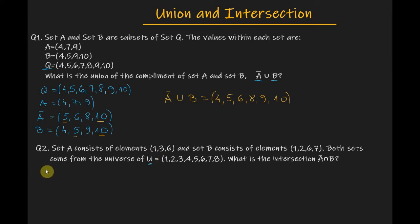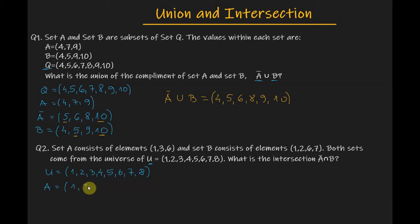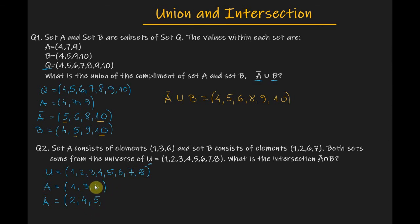We have the universal set U with the elements 1, 2, 3, 4, 5, 6, 7 and 8. We have the subset A with the elements 1, 3 and 6, and we want the complement of set A. So, 1 is taken away, we have 2; 3 is taken away, we have 4 and 5; 6 is taken away, and we are left with 7 and 8. So this is the complement of set A: {2, 4, 5, 7, 8}.